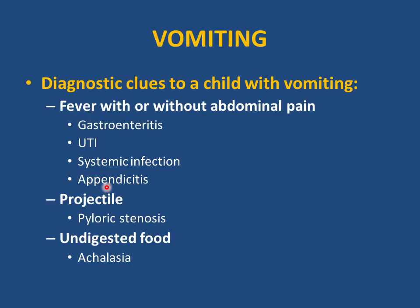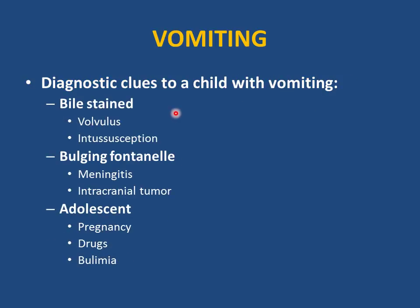Appendicitis is easy to miss in young children — it may present with vomiting with or without abdominal pain and with or without fever; keep it in your differential especially in infants. Projectile non-bilious vomiting is classic for pyloric stenosis; preterm infants may present with non-bilious persistent vomiting in the first 2-3 weeks. Undigested food is a clue for achalasia. Bilious vomiting is a diagnostic clue for surgical emergencies: volvulus, intussusception, or bowel obstruction such as duodenal atresia.